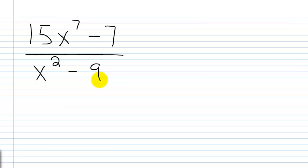So again, I want to look at my denominator here, and that's x squared minus 9, and I want to set that equal to 0 and find out what the restricted values are.